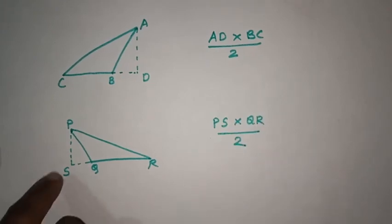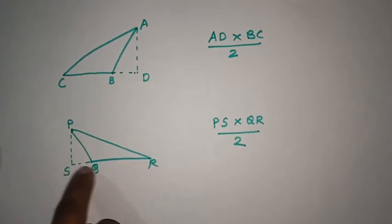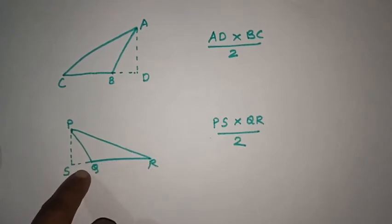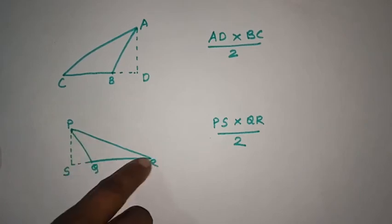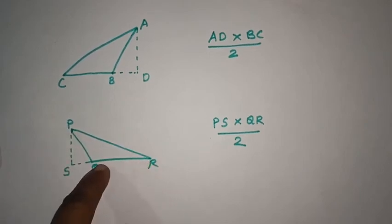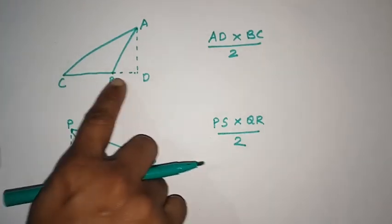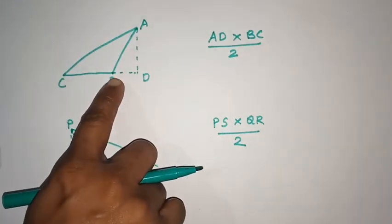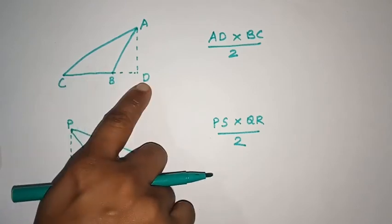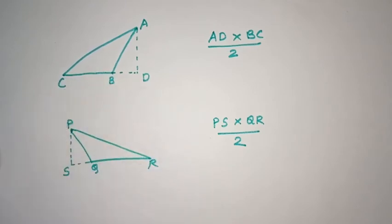What is it? P, S into Q, R. This is S, Q. We will take a look at X and X, because we will take a look at P, Q, R. We will take a look at Q, R here as well.